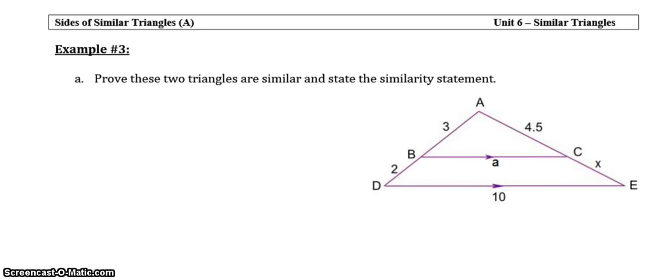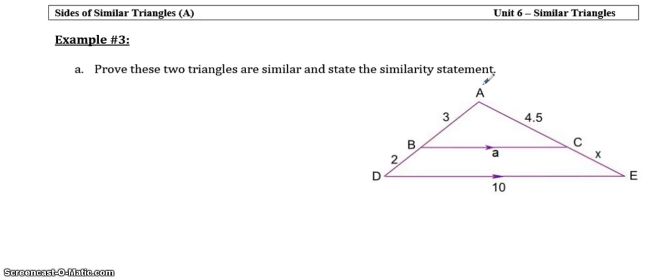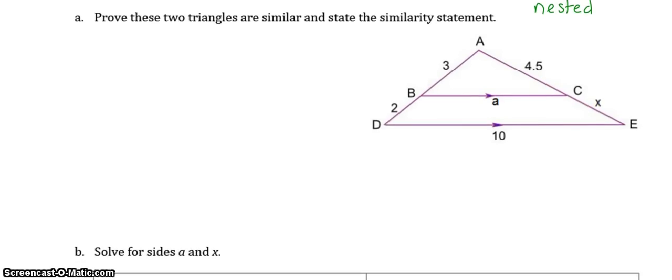The last type of example is what we call nested triangles. That means that one triangle is inside the other triangle. So in this case, what I like to do is to draw them out separately. So this is triangle A, B, C,